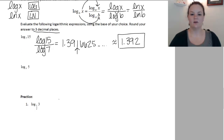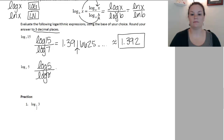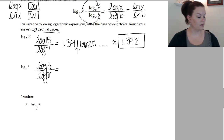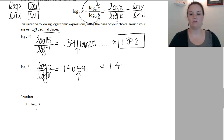This next one uses pi — we still work it the same way. Log base pi of 5: I can't use base pi in my calculator, so I change it to base 10. I do the log of my inside number, which is 5, divided by the log of my base, which is pi. Anytime you use pi, use the pi button on your calculator so it keeps all the decimal places and gives a more accurate answer. Log of 5 divided by log of pi gives 1.4059... My third decimal place is 5, and the number behind it is 9, so it rounds up. The answer is approximately 1.406.